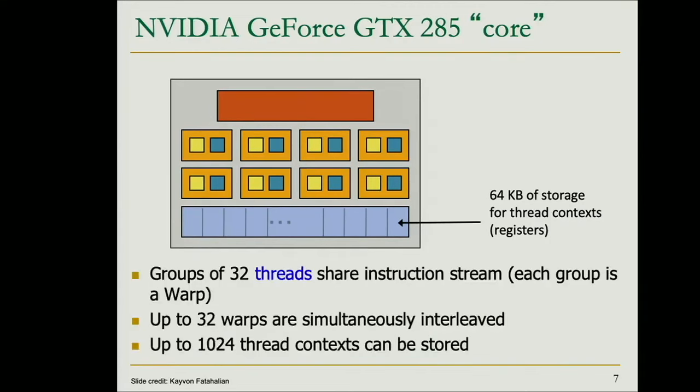On each GPU core, we map thread blocks. These thread blocks are decomposed into warps, and each warp is a set of 32 threads that run concurrently as a basic SIMD unit.